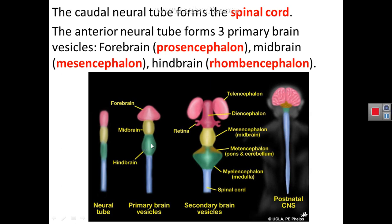The hindbrain also forms two secondary vesicles. The anterior one is called metencephalon, and the posterior one is called myelencephalon. The metencephalon will form the pons and cerebellum, while the myelencephalon forms the medulla oblongata.